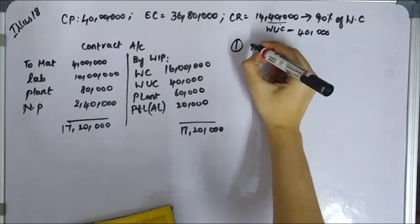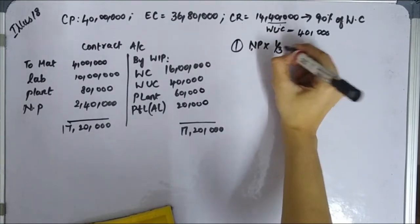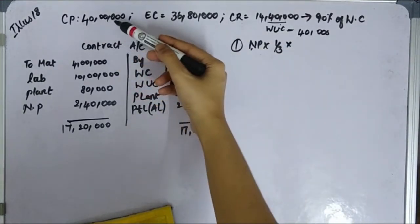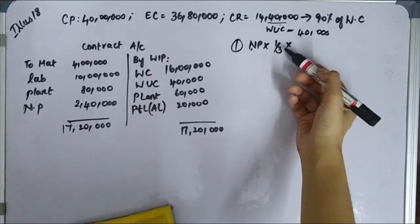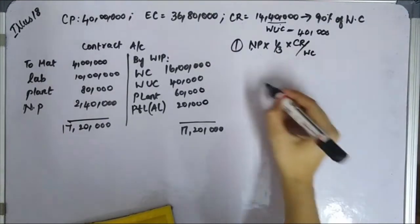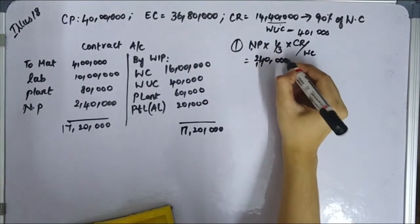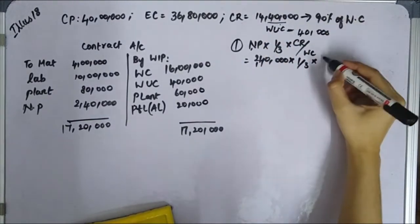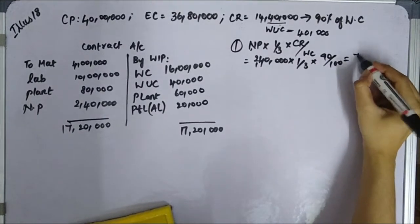The first formula: notional profit × 1/3. Work certified is 16,00,000 and contract price is 40,00,000, so 25% is the ratio of work certified. Using the formula: notional profit × 1/3 × cash received divided by work certified. Total notional profit is 2,40,000 × 1/3 × 90% = 72,000.